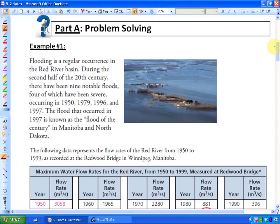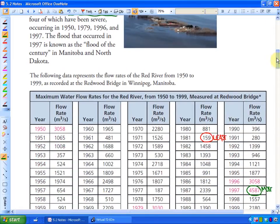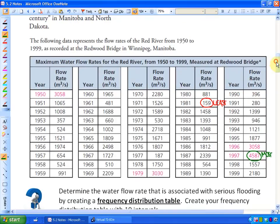Any more or less than that doesn't tend to show the data accurately enough, or it's too confusing. So in your study guide, let's look at this first problem here. It's talking about flooding. Flooding is a regular occurrence in the Red River Basin. During the second half of the 20th century, there have been 9 notable floods. Four of which have been severe in these years. The flood that occurred in 1997 is known as the flood of the century.